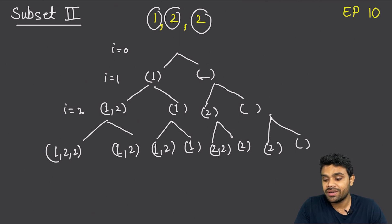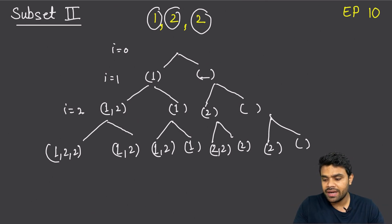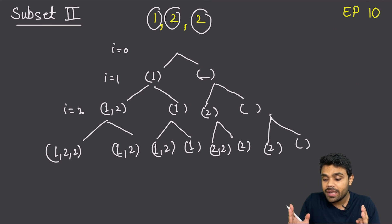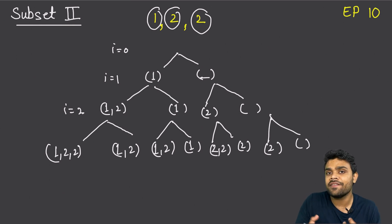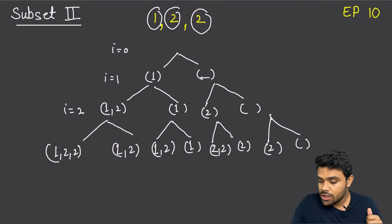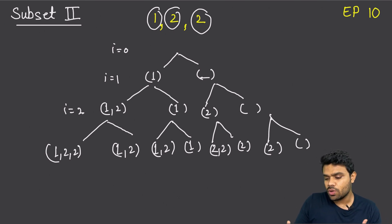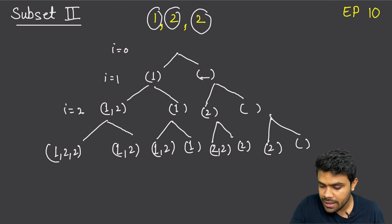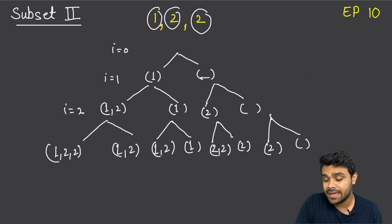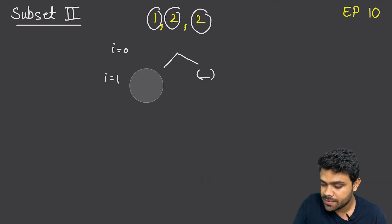The process of generating subsets will remain the same, but we need to look very carefully at where exactly we are going wrong, so that we don't go in that direction. Let's try to construct this tree again and identify exactly where we are going wrong.